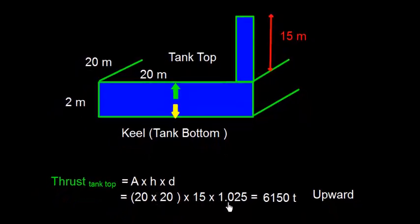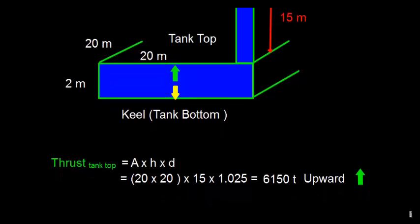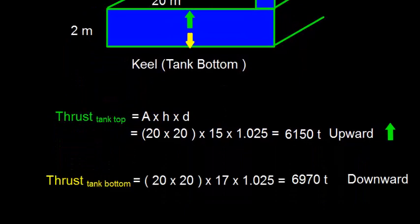So we get 6150 ton upward in upward direction. Similarly, let me find out the thrust on keel plate, that is tank bottom. So thrust on tank bottom is going to be 20 into 20 into H is 17.